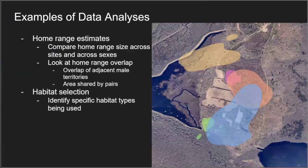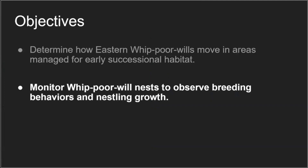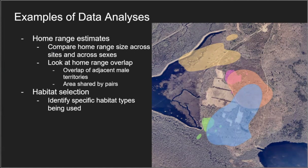The software extrapolates out and creates an estimated area around where those points were, telling us where these birds were spending their time. With this we can look at the size of the home range and compare sizes between sites and between sexes — do males have larger home ranges than females? We can also look at overlap between adjacent males or pairs — do female home ranges fall entirely within male home ranges? We can also identify key habitat types these birds are selecting for, which is very important for management.